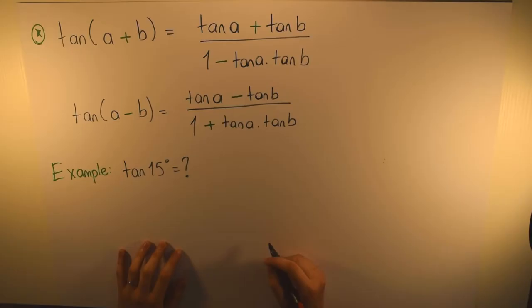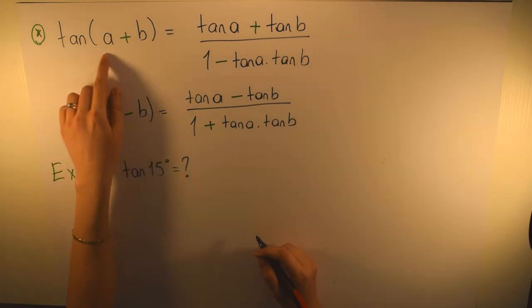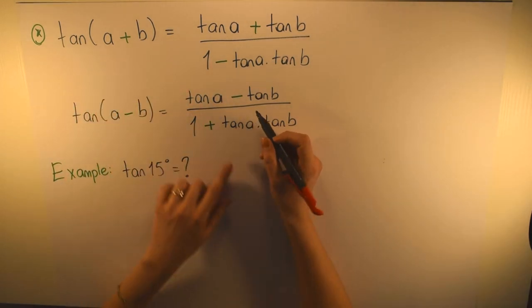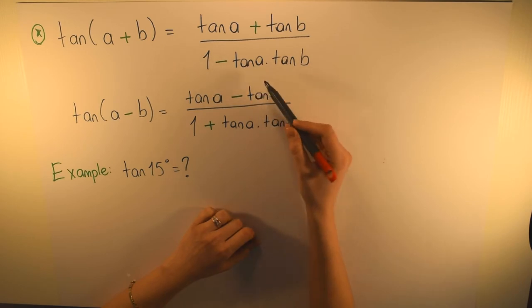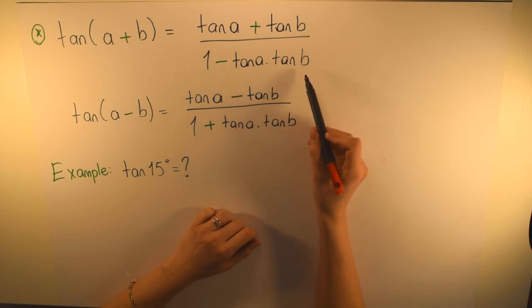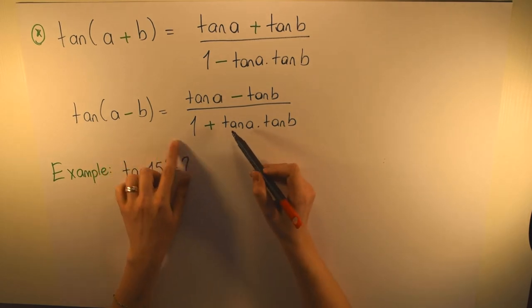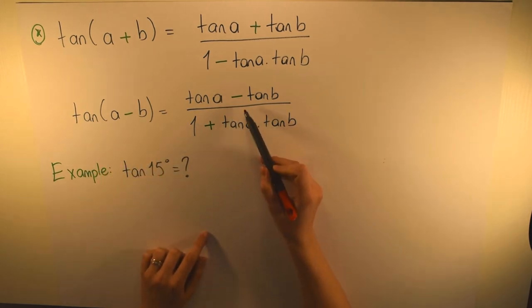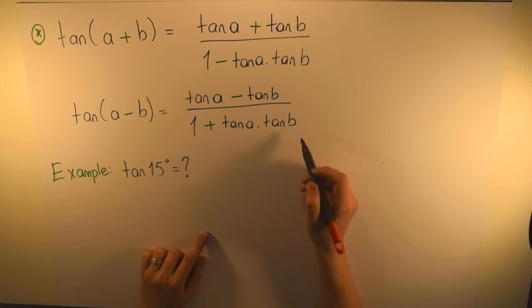Now let's look at the sum and difference formulas for the tangent function. Tangent(a+b) = (tangent a + tangent b) / (1 − tangent a · tangent b), and tangent(a−b) = (tangent a − tangent b) / (1 + tangent a · tangent b).